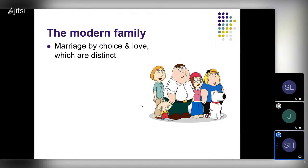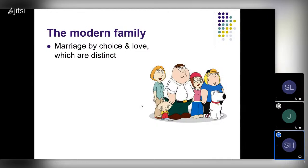First, marriage is by choice and by love. It's important to distinguish between choice and love — sometimes we run those together. We think of arranged marriages as having no choice and no love, and everything else as choice and love, but there's a third option: people can get married by choice but not for love. For a good chunk of the history of the West, that's more or less how people got married. You could choose who you were marrying within certain limits, but you didn't always marry for romantic love in the sense we understand now.